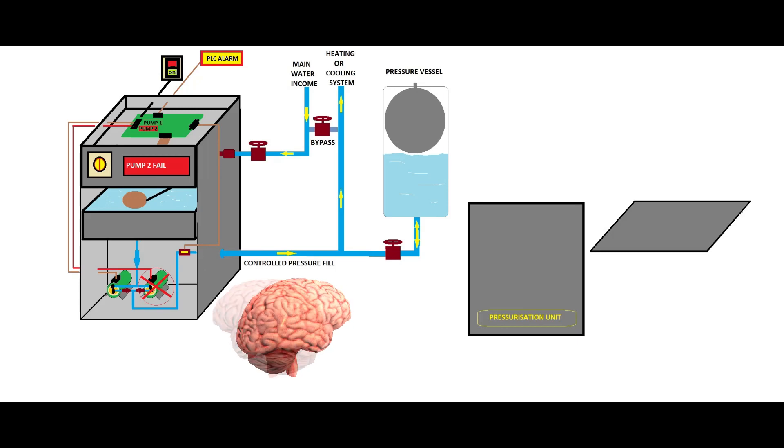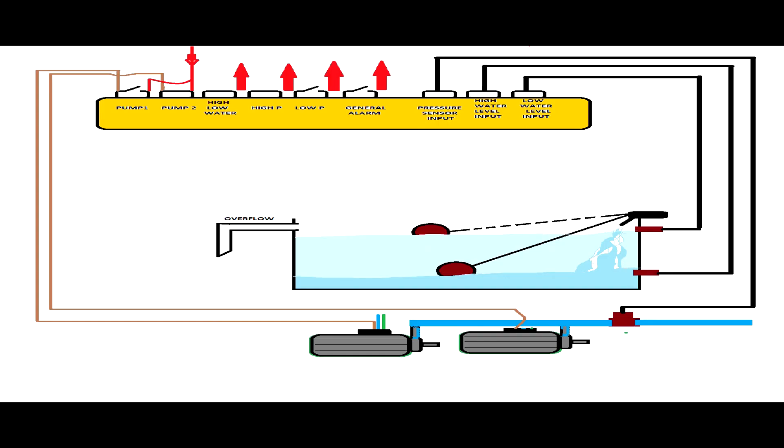So a very good idea in this situation if we have two pumps is to analyze quickly the printed circuit board. As you'll see we have two relays: relay number one which drives pump number one and relay number two which drives pump number two. But pump number two is faulty.